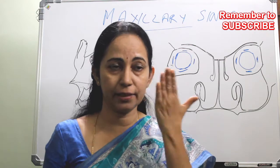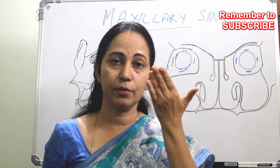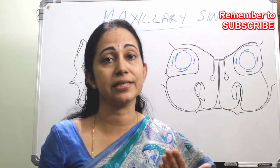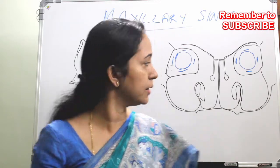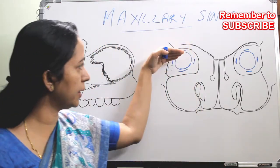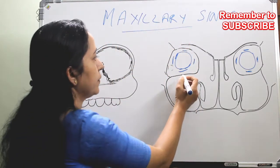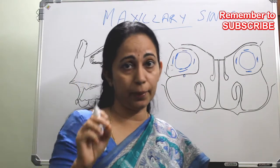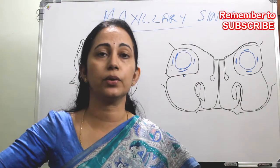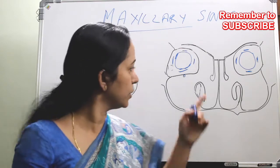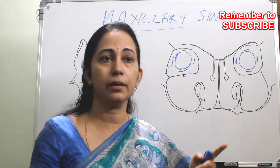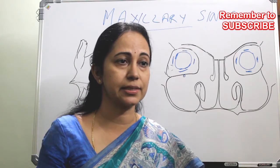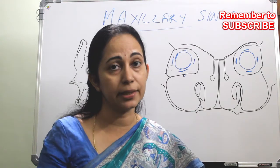Anteriorly, the anterior wall has skin followed by fat, subcutaneous tissue, and the facial musculature. Superiorly comes the orbit. Along with that, there is an infraorbital foramen, which leads into the infraorbital canal. Through the infraorbital foramen passes the infraorbital nerve and artery.